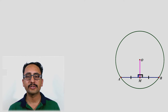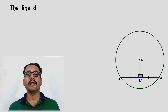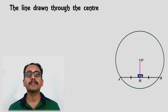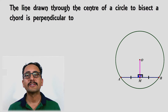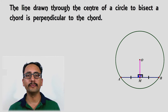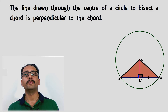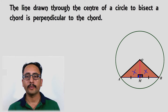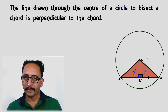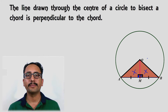The statement of the theorem is: the line drawn through the center of a circle to bisect a chord is perpendicular to the chord. To prove this, we will join OA and OB and prove that the two triangles are congruent. From that congruency, we will prove that OM is perpendicular to AB.